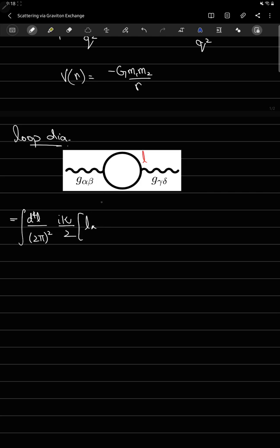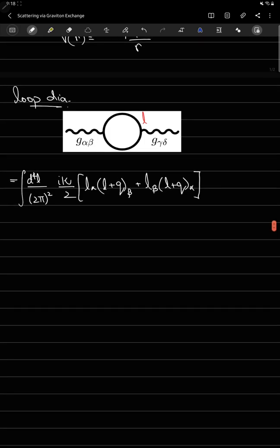We have l alpha times, due to conservation of momentum, l plus q to beta plus l beta and l plus q to alpha. Then you have iota over l squared times iota over l plus q squared. Finally you have iota kappa over 2, l delta l plus q gamma plus l gamma l plus q delta.